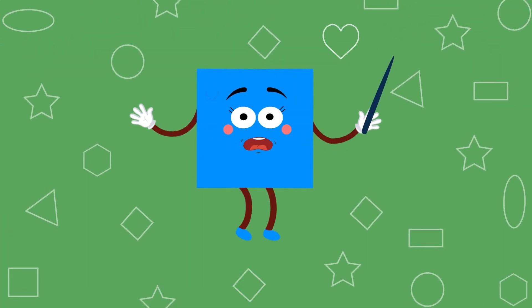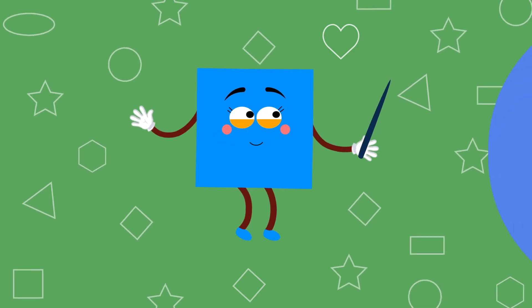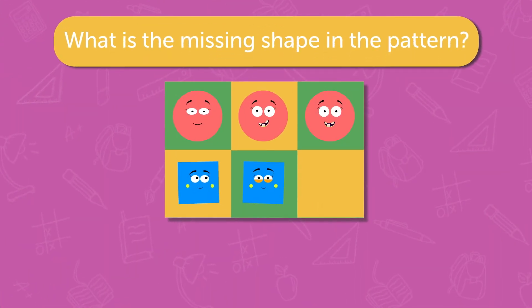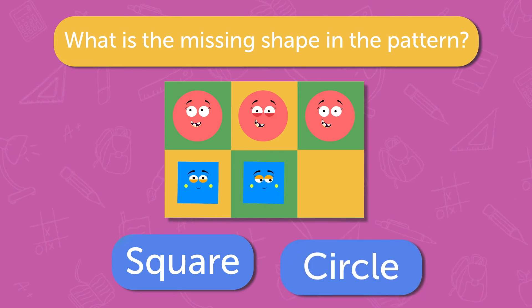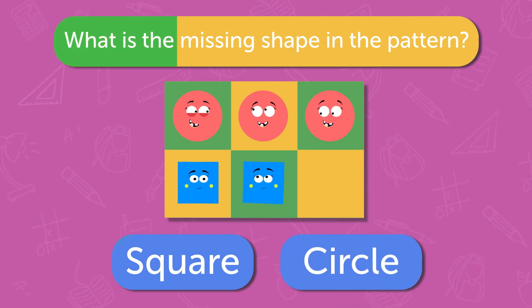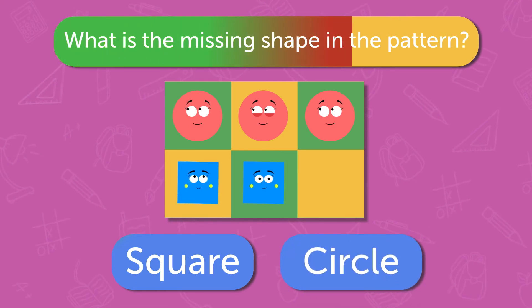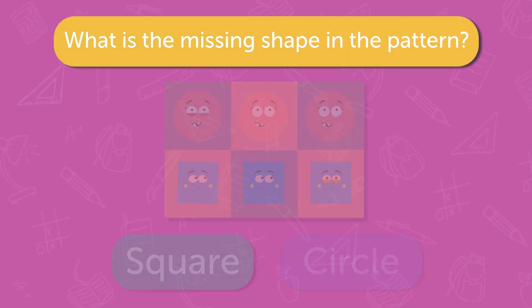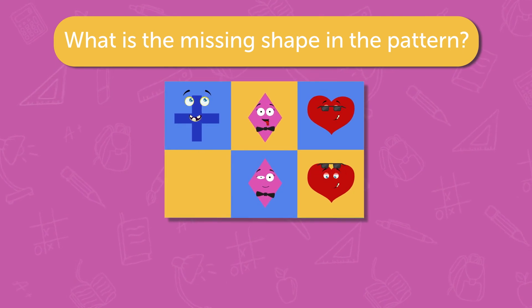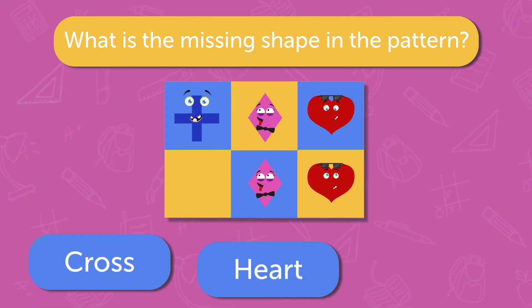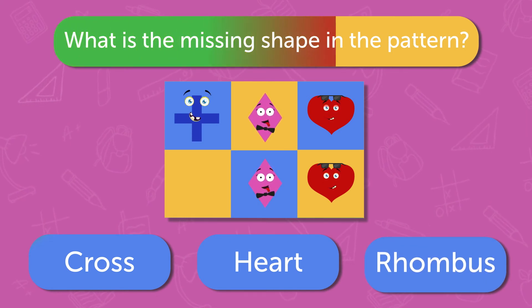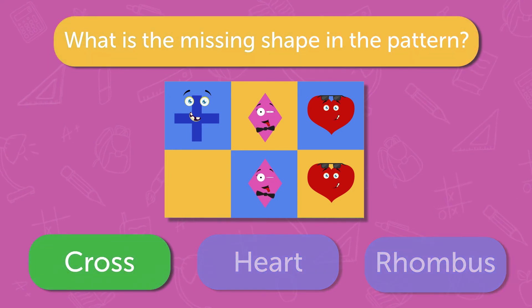Well done, you did great. Let's try the next quiz. What is the missing shape in the pattern? Square, Circle. Circle. What is the missing shape in the pattern? Cross, Heart, Rhombus. Cross.